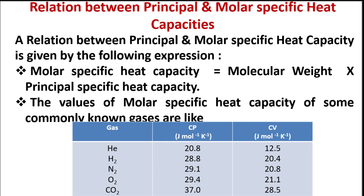Now let us see the values of molar specific heat capacity of some commonly known gases, given in terms of joules per mole per degree Kelvin — at both the molar specific heat capacity at constant pressure (Cp) and molar specific heat capacity at constant volume (Cv).